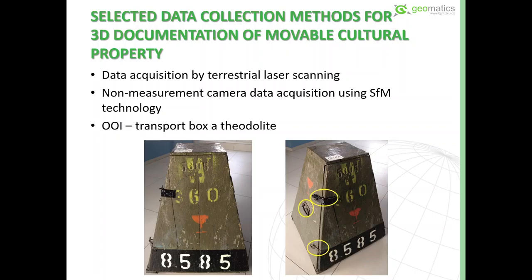The first method we used was terrestrial laser scanning, and the second method was the structure from motion method using a non-measurement camera. The object of interest was a movable transport box of eternal light, as you can see on the slide.